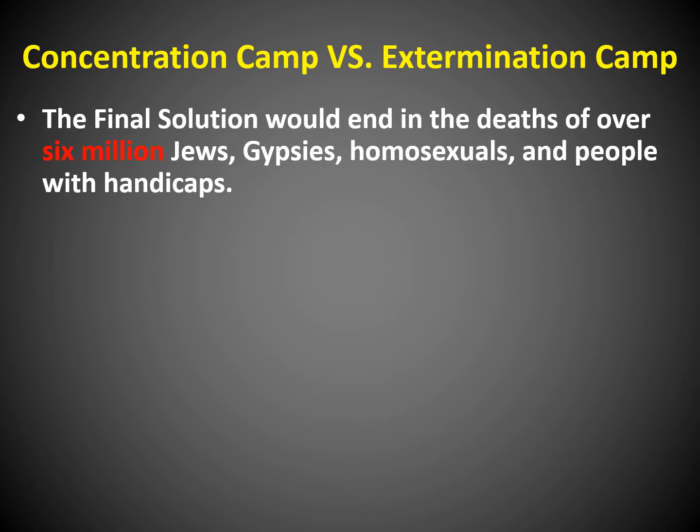The final solution would end the lives of over 6 million Jews, Gypsies, homosexuals, and people with handicaps. We talked about in the previous lecture that yes, it was majority Jewish people, but there were other types of people that Hitler decided weren't the premium race or type of people.